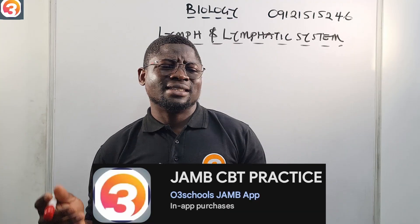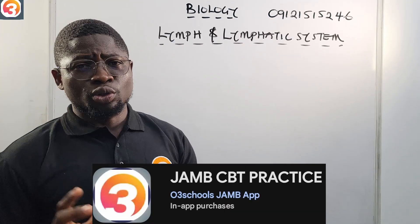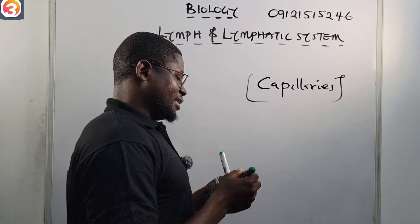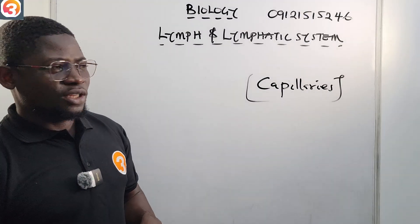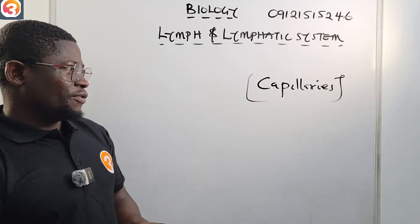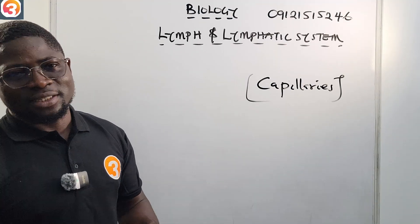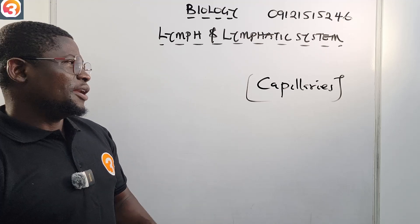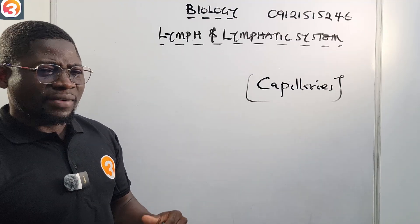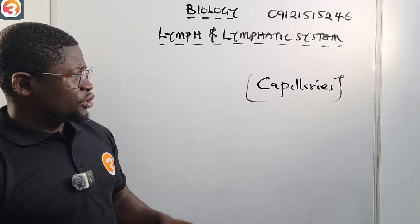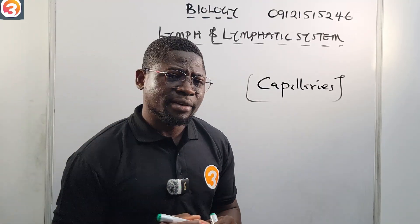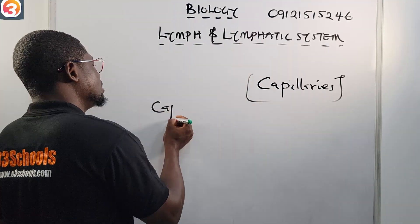Now let us go to the lymphatic system. To understand the lymphatic system, we're going to dwell more on the capillaries — this is where we start our discussion. We know capillaries connect the veins and the arteries, and they help deliver nutrients to different parts of our body cells. Capillaries are the smallest and thinnest vessels, only one cell thick, as we talked about in the previous class.